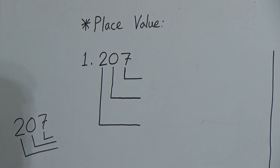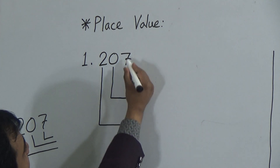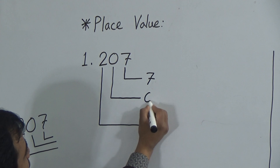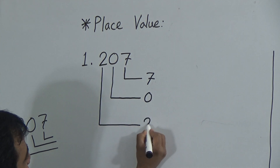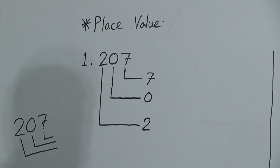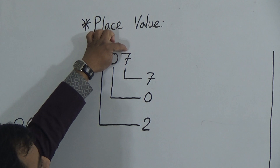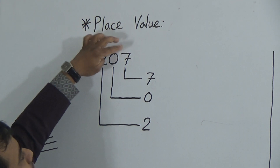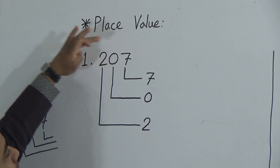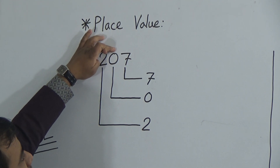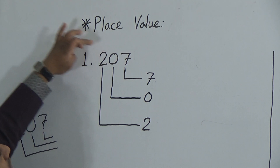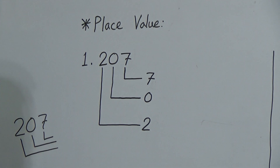You should draw the lines like this. Now, this is 7, this is 0, and this line indicates the number 2. From the right side, we know the place value. From the right side, this indicates the 1's position. Then after 7, that means after the 1's position, we reach the 10's position, then the 100's position, and then 1000's and so on.